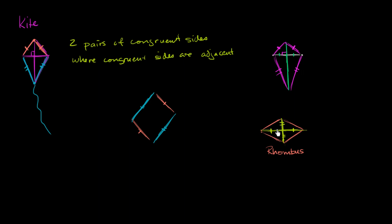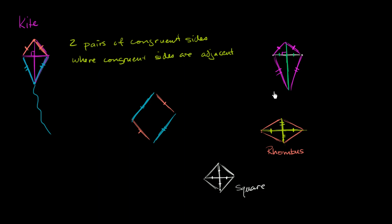And if you go even further — where these two diagonals have the exact same length and are both perpendicular bisectors of each other — then each of these halves would be the same length as well, and you get a square, which is a subset of rhombi. So any square is also a rhombus, which also satisfies the constraints for being a kite. But there are plenty of kites that don't satisfy the constraints of being a rhombus or a square. A kite is simply two pairs of congruent sides that are adjacent to each other, and they're usually easy to spot because they look like kites.